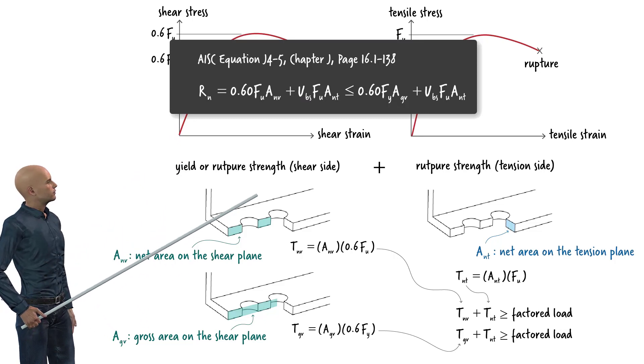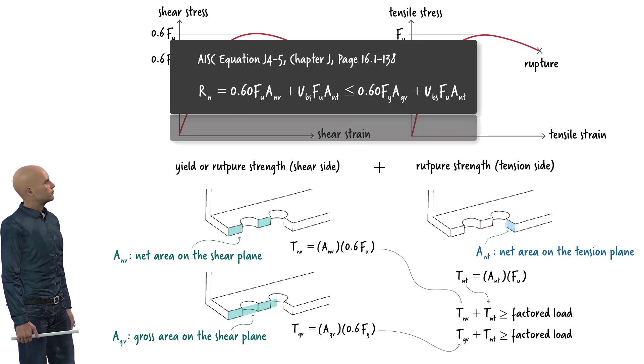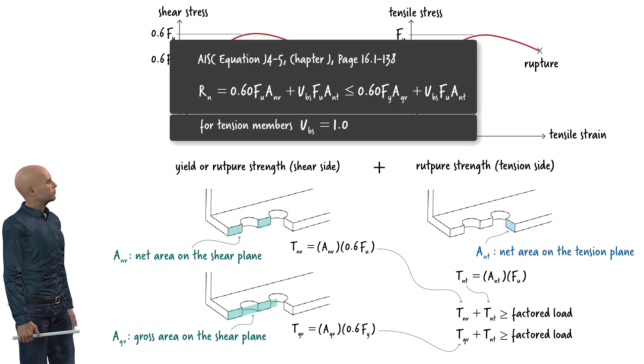U sub BS is called block shear reduction coefficient. It pertains to the stress distribution pattern on the tension plane. The stress distribution in some beams may not be uniform. In such cases, we use a reduction coefficient of less than 1. For tension members, the stress distribution is assumed to be uniform. That is, U sub BS equals 1.